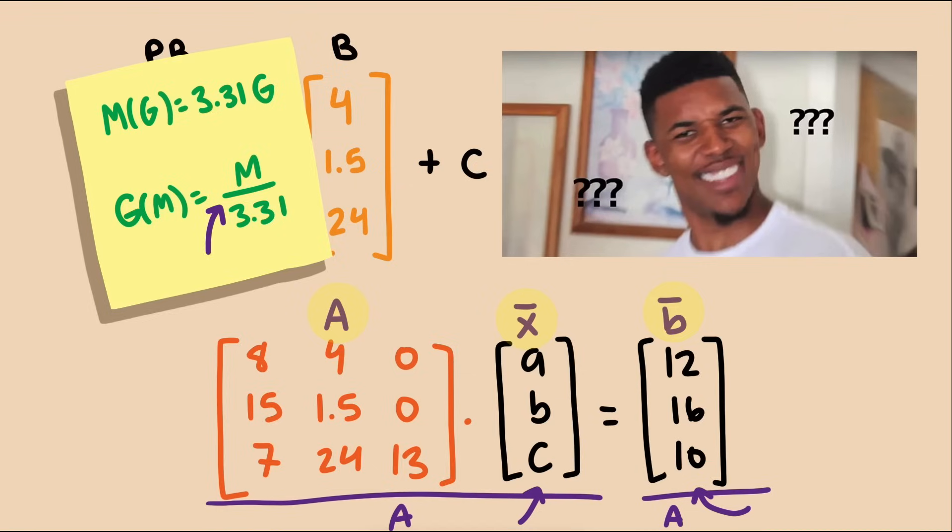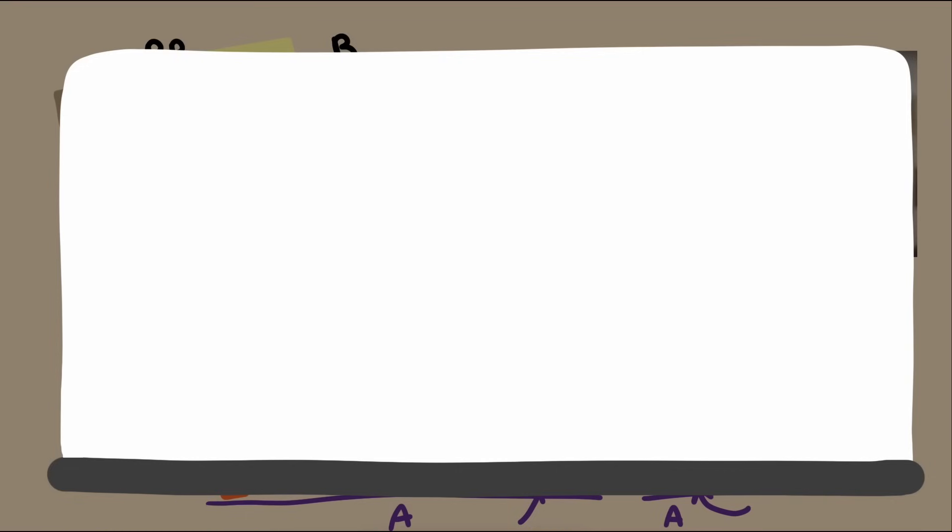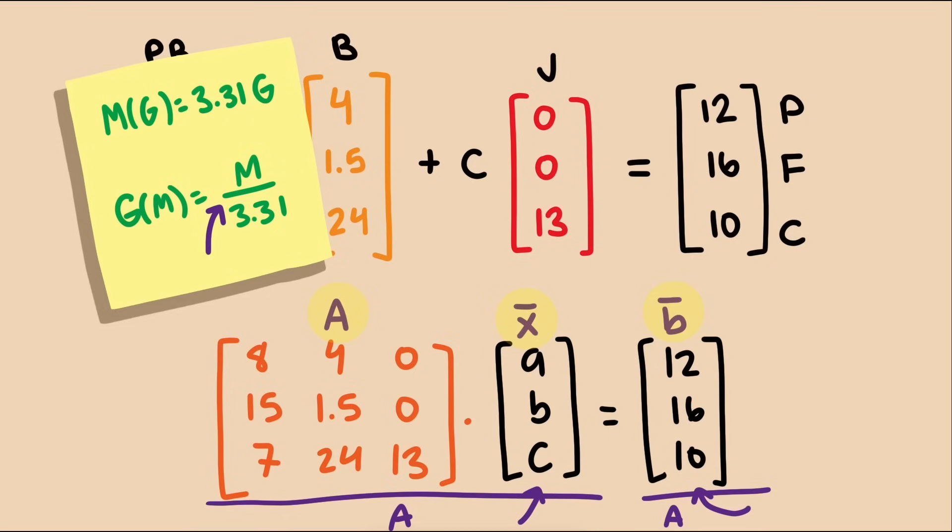Well, what would division by a matrix even mean? Let's connect the idea of division to an inverse. In the same way that we could think of division of 5 as a multiplication of its inverse, 1 fifth, we can think of dividing by a matrix as a multiplication by an inverse.